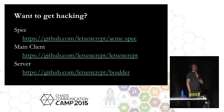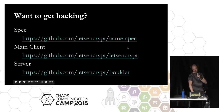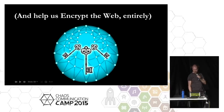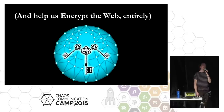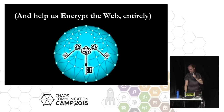Three main repos there. There's a specification repo that's pretty much frozen at this point — it's there for documentation. There's the Python client, which I'll show you in a second, and the server — the CA that's written in Go — called Boulder. And if you come and work with us, you can help us build a fully encrypted web.